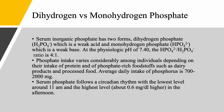Serum inorganic phosphate has two forms: dihydrogen phosphate, H₂PO₄⁻, which is a weak acid; and monohydrogen phosphate, HPO₄²⁻, which is a weak base. At a physiologic pH, the ratio of monohydrogen phosphate to dihydrogen phosphate is 4-to-1. So you have four times more monohydrogen phosphate than dihydrogen phosphate — meaning more of the base form than the acid form.